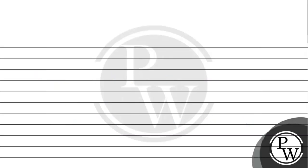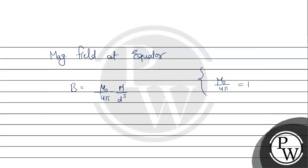We know that magnetic field at equator B equal mu 0 by 4 pi, M by d cube. Mu 0 by 4 pi is 10 power minus 7. We have to find out magnetic moment. Magnetic moment is B d cube upon 10 power minus 7.